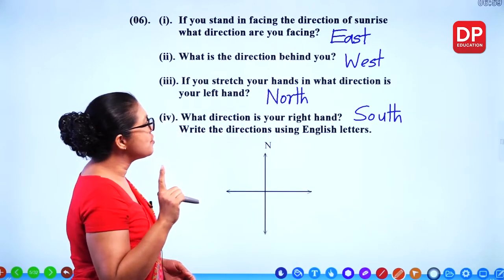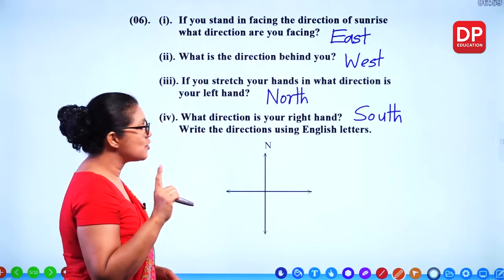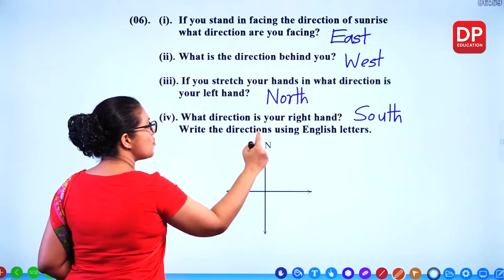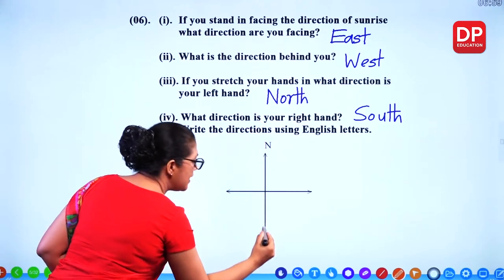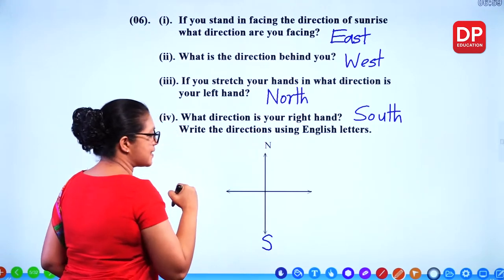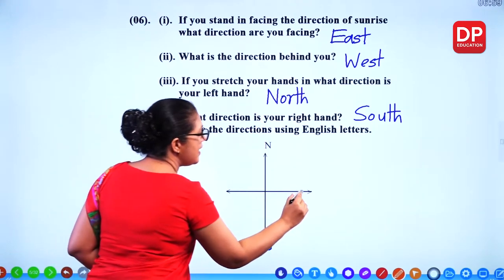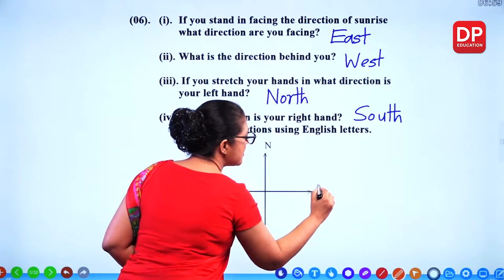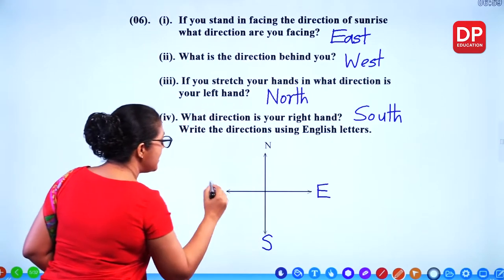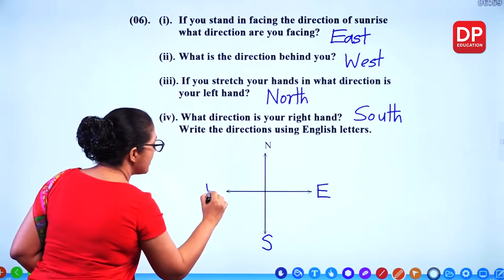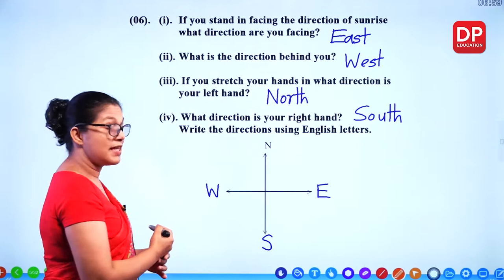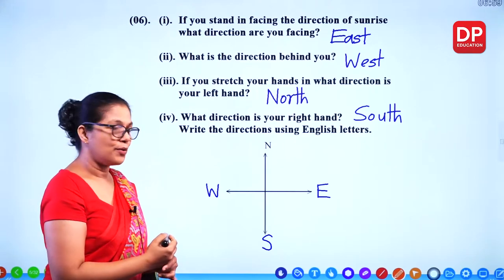And what direction is your right hand? If the left is north, then the right side is south. We write directions using English letters: N for north, S for south, E for east, and W for west.